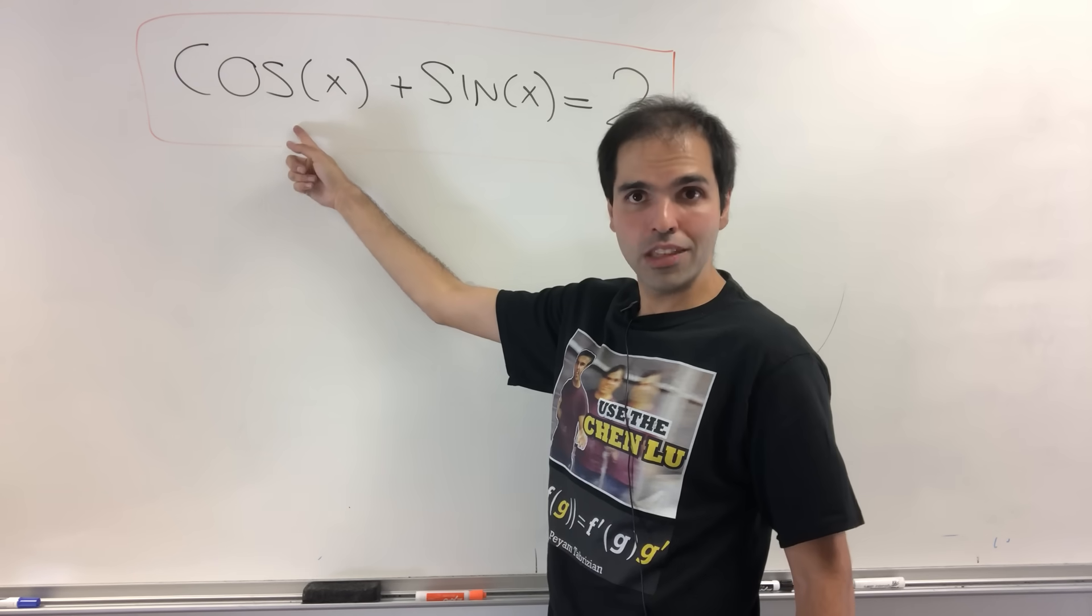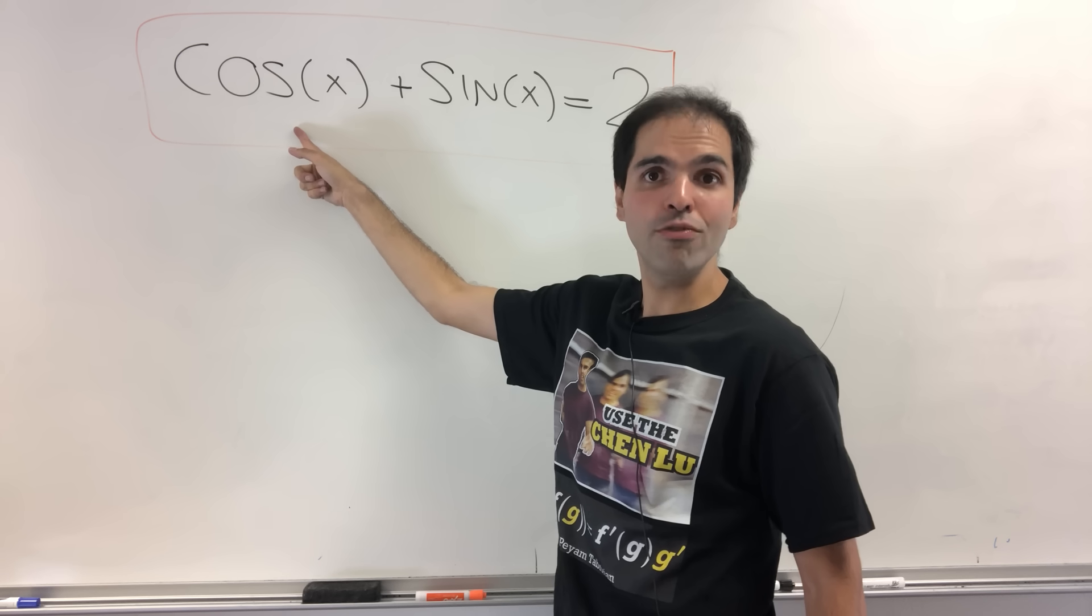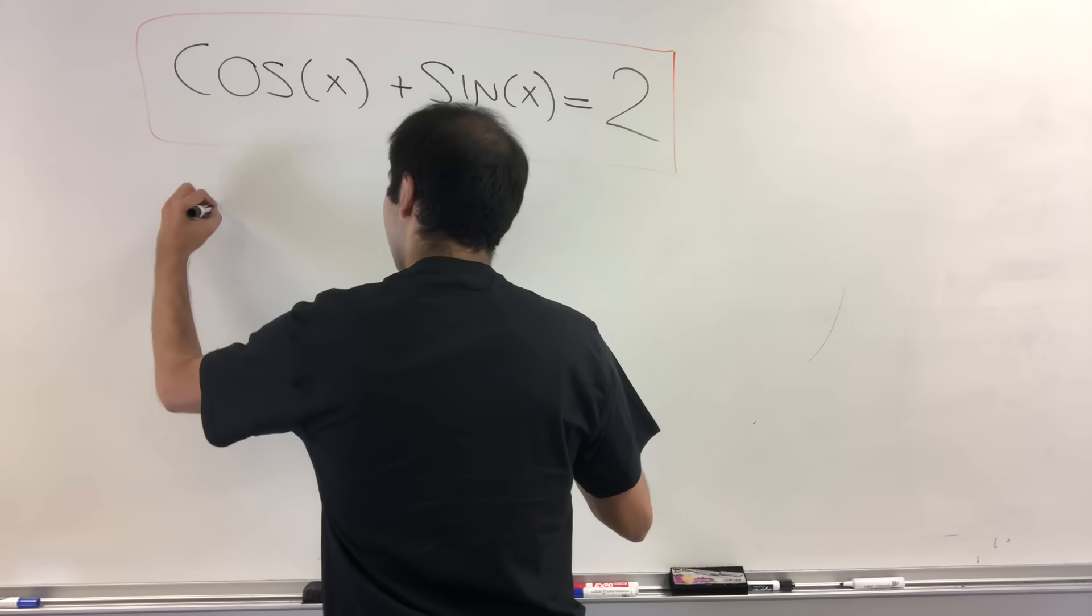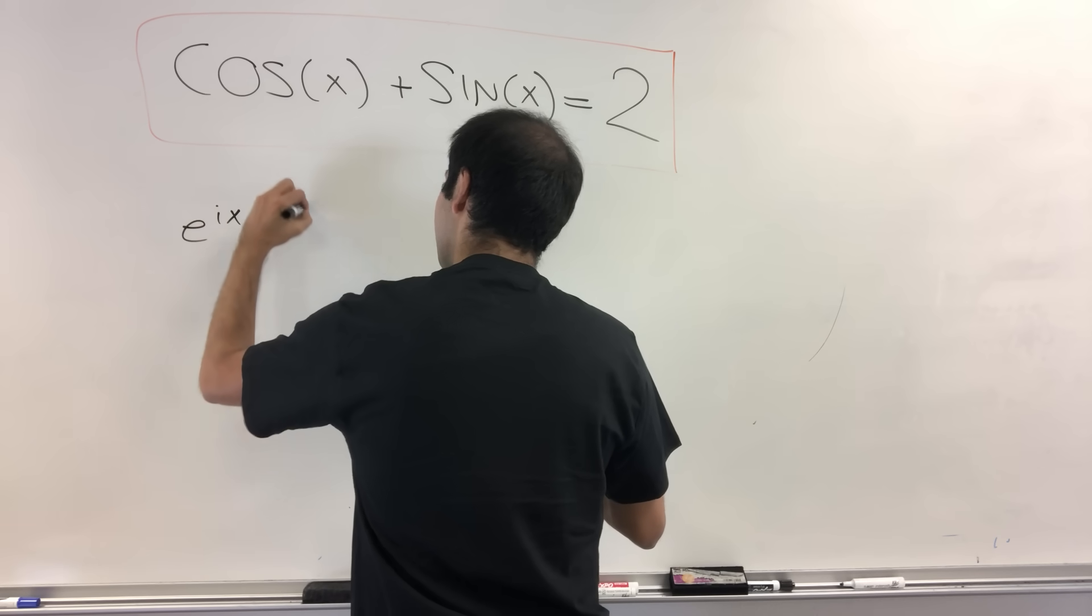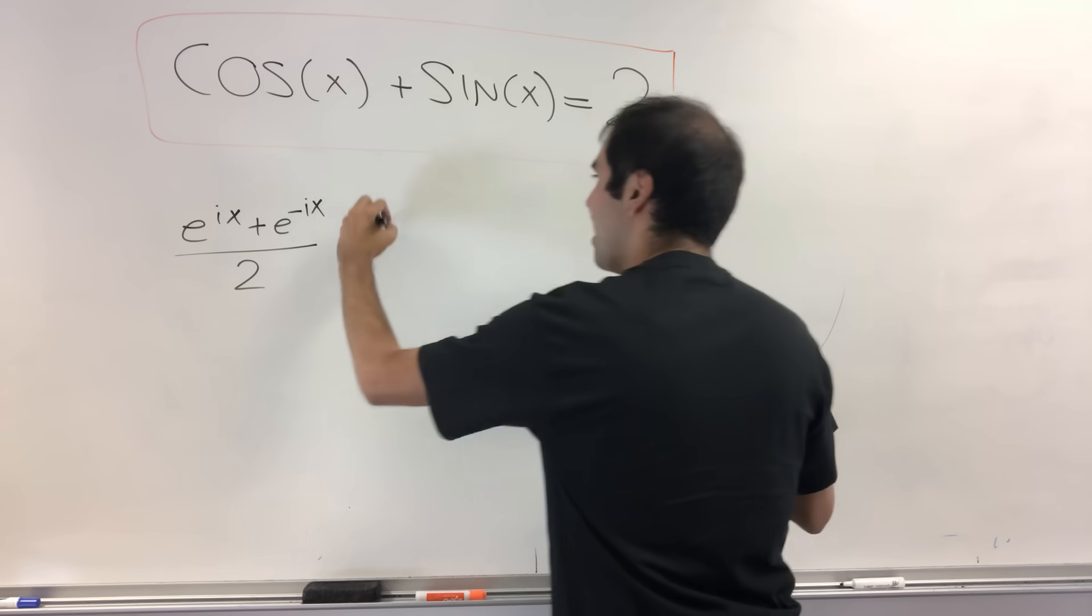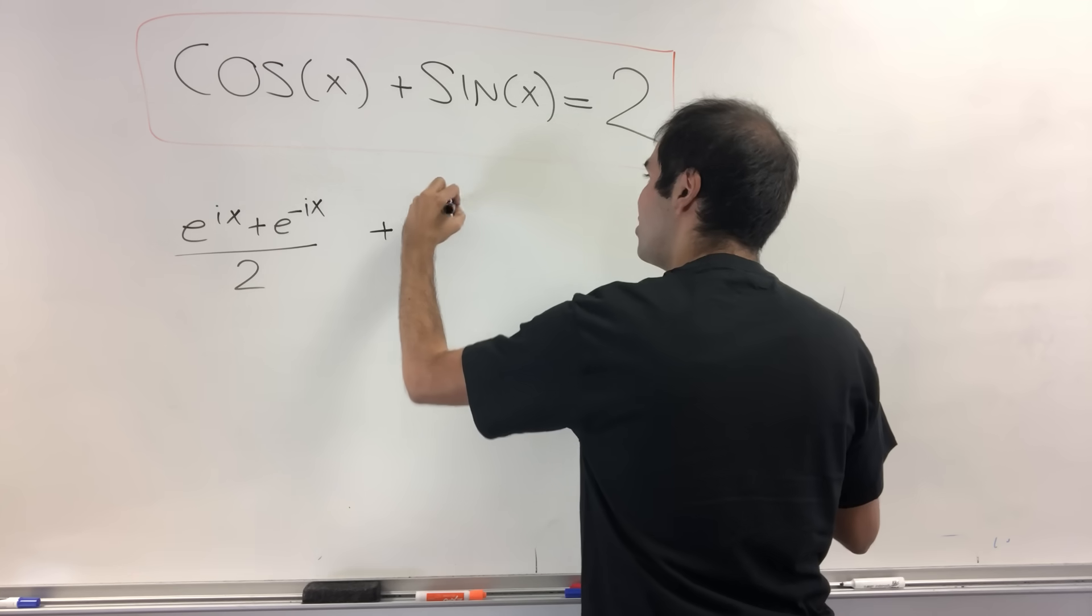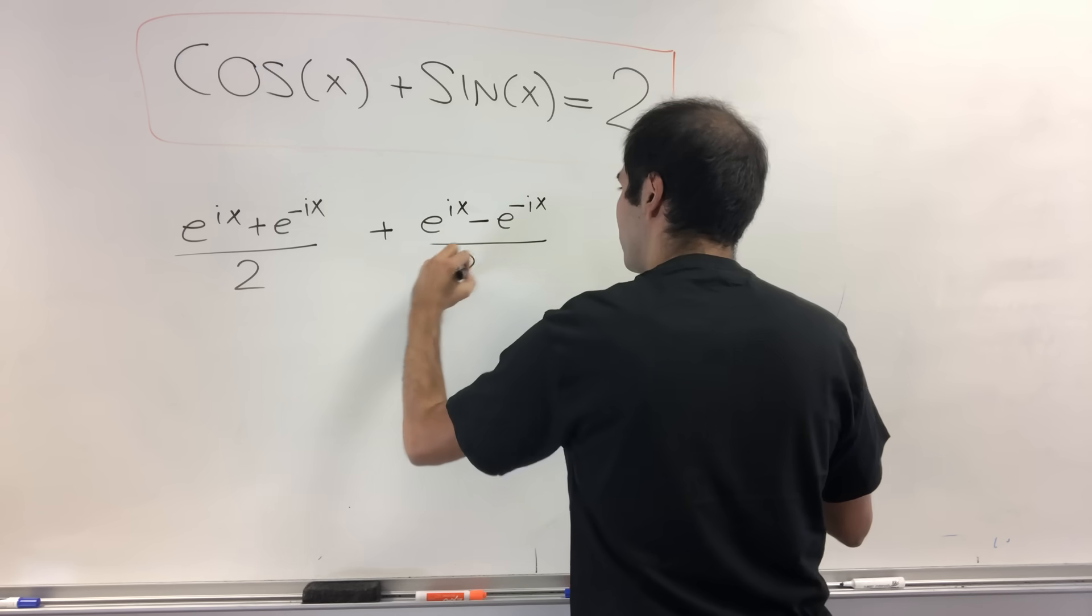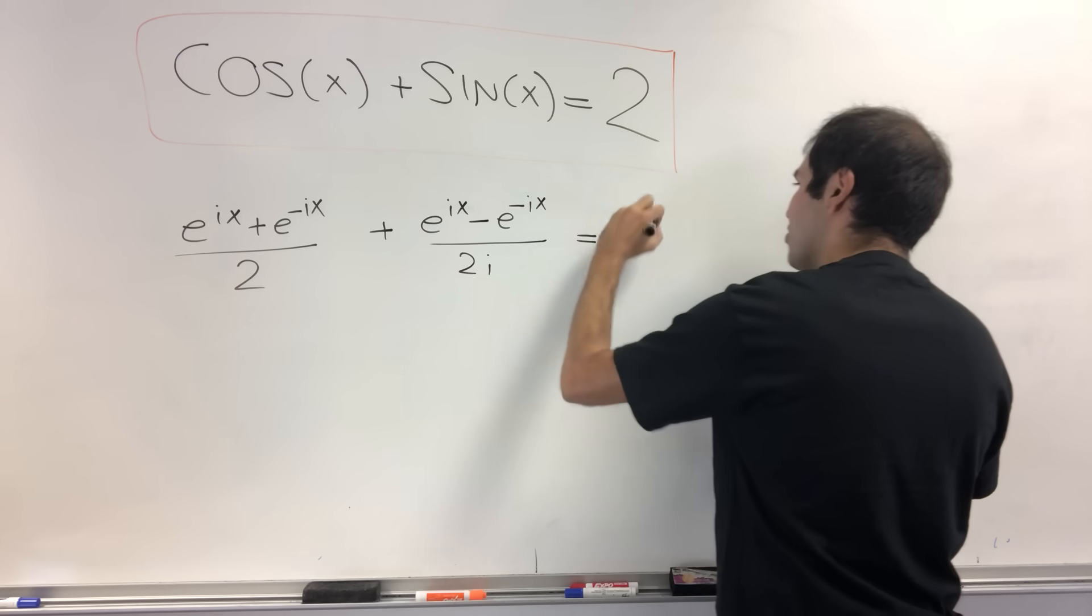First step, it turns out cosine can be rewritten in terms of exponentials as follows: e^(ix) + e^(-ix) over 2. And then sine is e^(ix) - e^(-ix) over 2i. And you set it equal to 2.